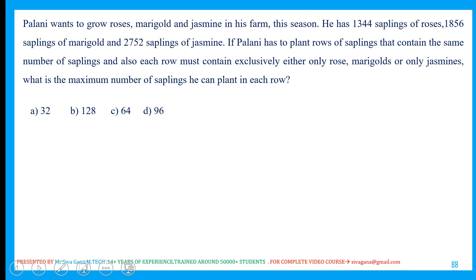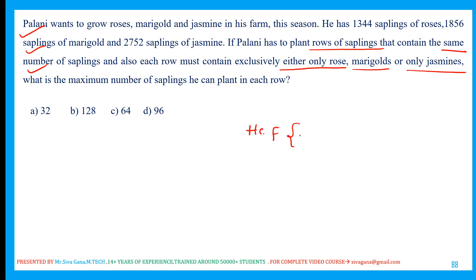Next concept: Palani wants to grow roses, marigold, and jasmine in his farm. This season, 1344 saplings of roses, 1856 marigold saplings, and 2752 jasmine saplings. If Palani has to plant rows of saplings containing the same number of saplings in each row, and each row must contain exclusively either only rose, only marigold, or only jasmine — what is the maximum number of saplings in each row? The answer is simply the HCF of 1344, 2752, and 1856.